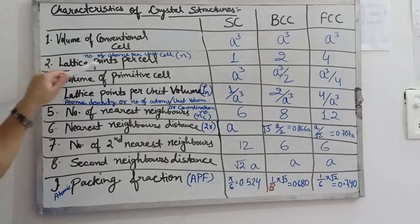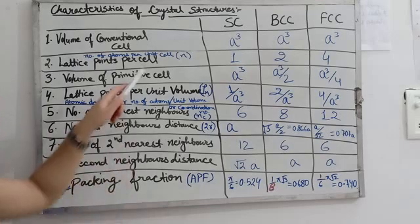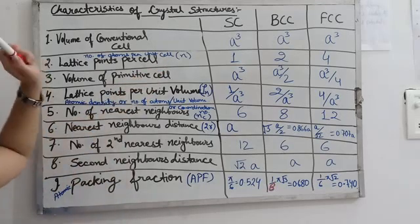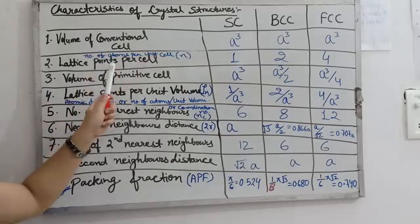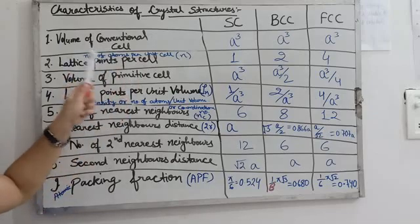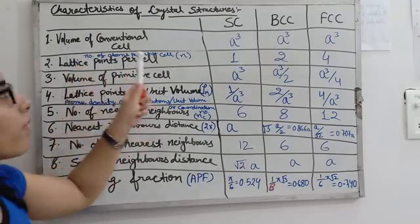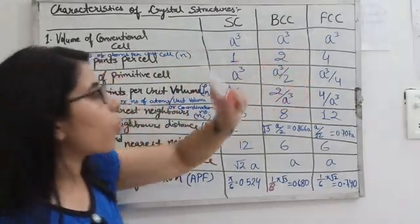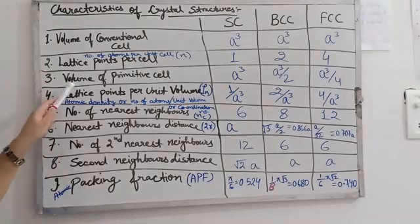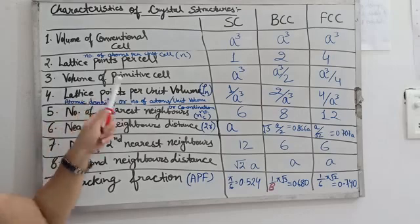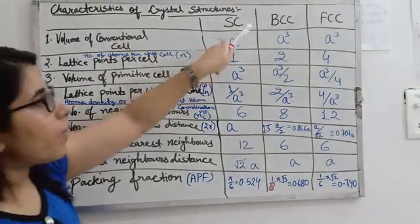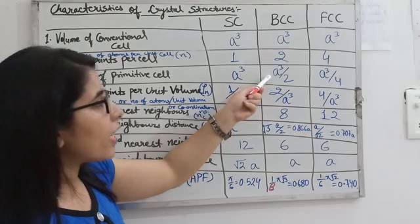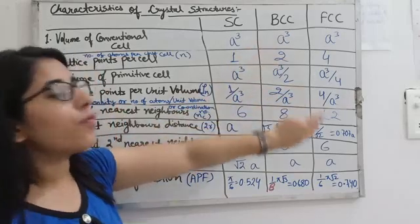The next property is lattice points per cell, or number of atoms per unit cell, denoted by small n. For simple cubic it is a³ (n=1), for body centered cubic it is a³/2 (n=2), and for face centered cubic it is a³/4 (n=4). The next property is the volume of the primitive cell: for simple cubic it is a³, for body centered cubic it is a³/2, and for face centered cubic it is a³/4.